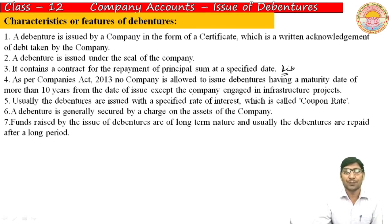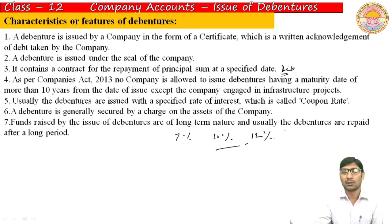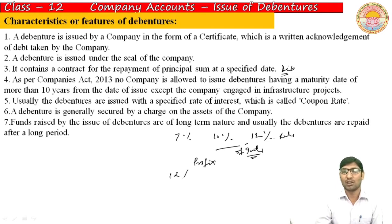Usually, debentures are issued with a specified rate of interest — the rate is prefixed. For example, 7%, 10%, or 12%. This rate of interest is given in the terms of issue and must be mentioned along with the debenture certificate as a prefix, such as '12% debenture' or '9% debenture'.